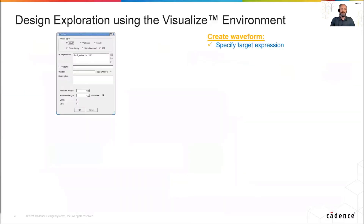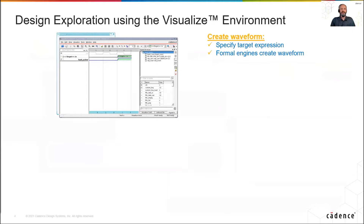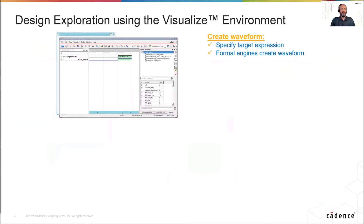Jasper Visualize offers the designer a flexible way to generate and manipulate waveforms. Designers can specify a target expression involving any signals or outputs of your RTL — for example, FIFO full or output packet valid. Visualize will then use formal engines to automatically create a waveform. Once the waveform is produced, the designer has full access to all signals along with an annotated source browser.